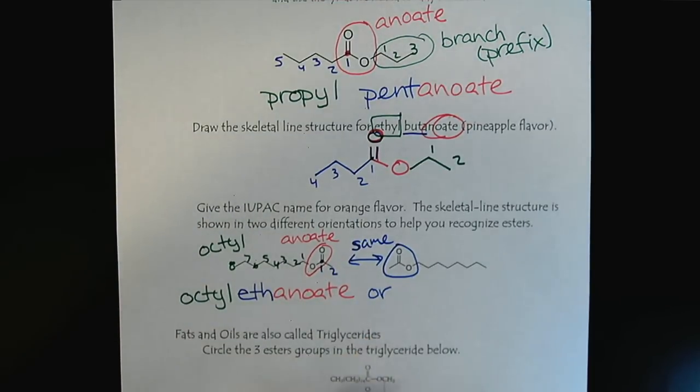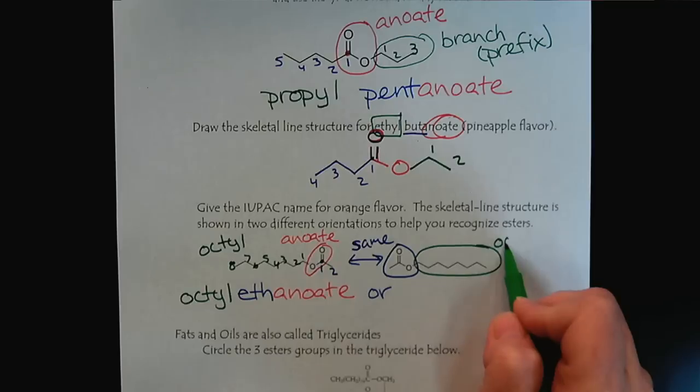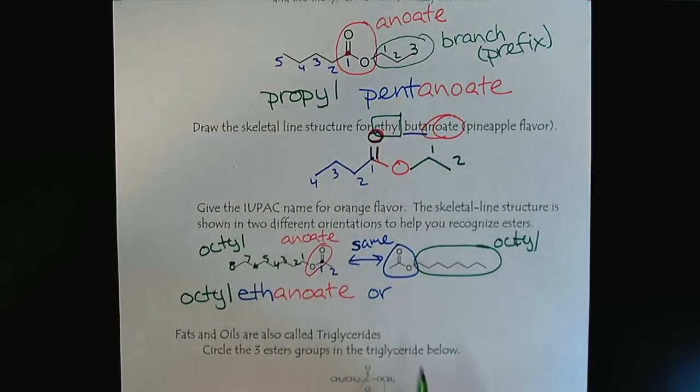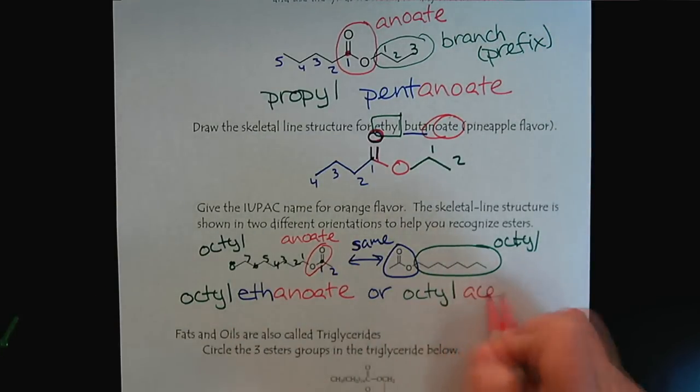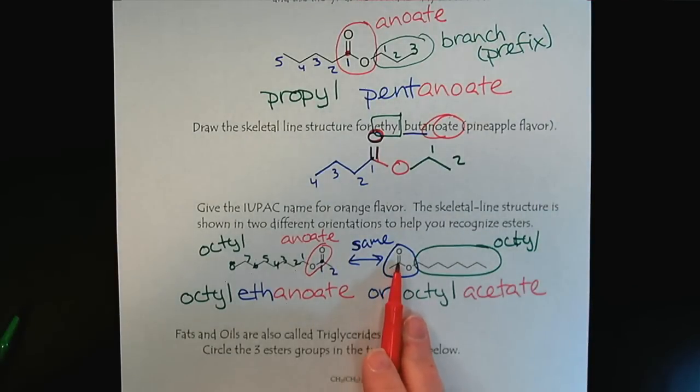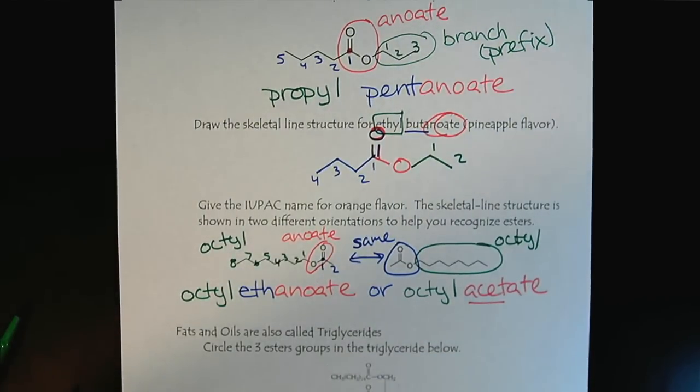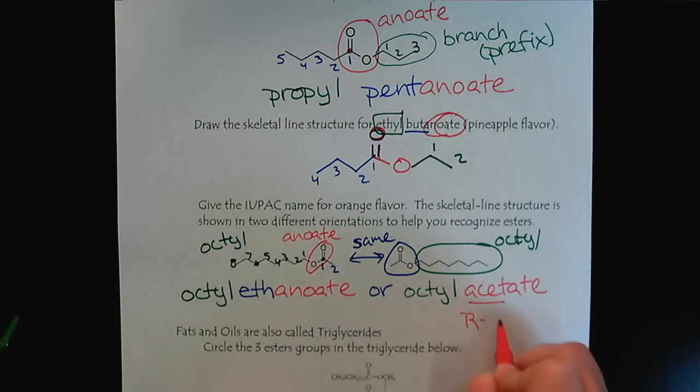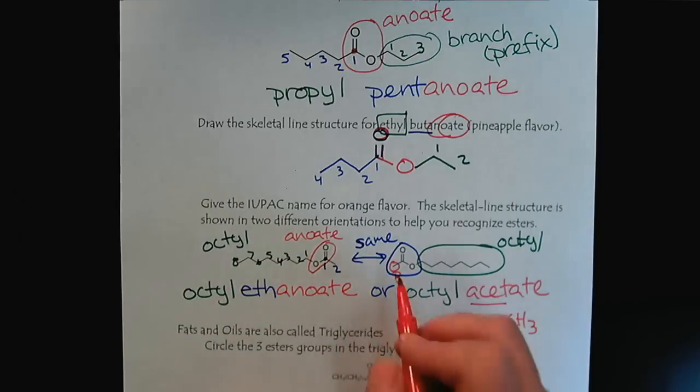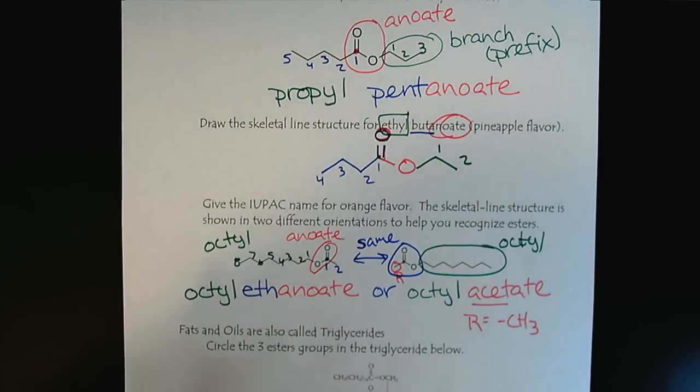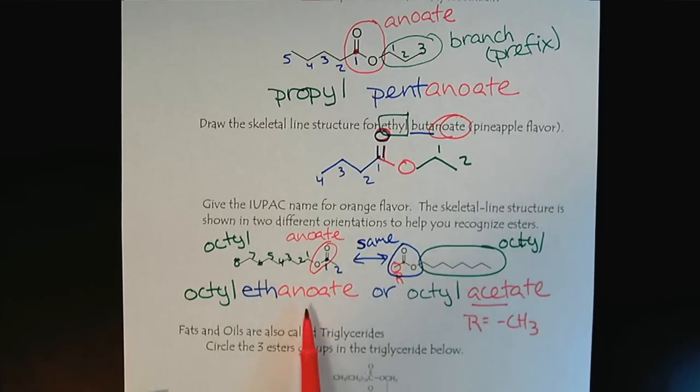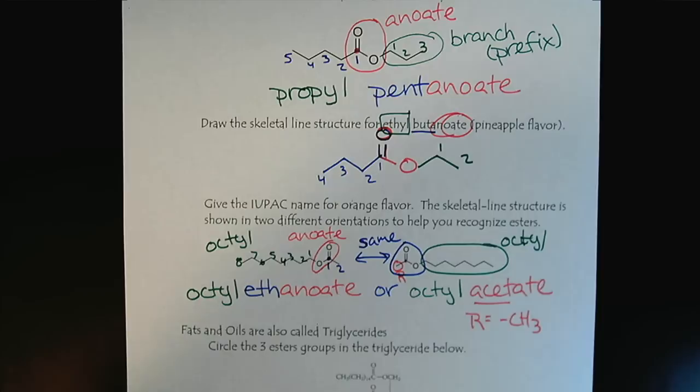And so, the other way that you will see this written is we still have our octal group. That hasn't changed. But ethanoate is often replaced. We could say that this is octal acetate. So, having one methyl group coming off of the carbonyl carbon is a very common situation. And so, we have the common name ACET. Whenever you see ACET, you know that the R group is equal to a methyl group coming off right here. So, basically, we're ignoring the carbon of the carbonyl carbon. So, there are two names. You'll either see this written as octal ethanoate. More likely, you'll see it written as octal acetate.